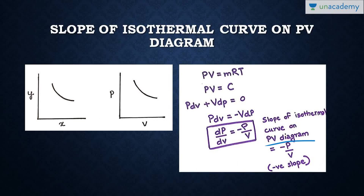The minus sign simply indicates the direction; what matters is the magnitude, which is P/V. So the slope of the isothermal curve on a PV diagram is equal to −P/V, indicating a negative slope.